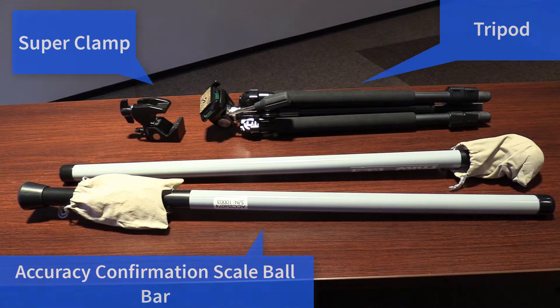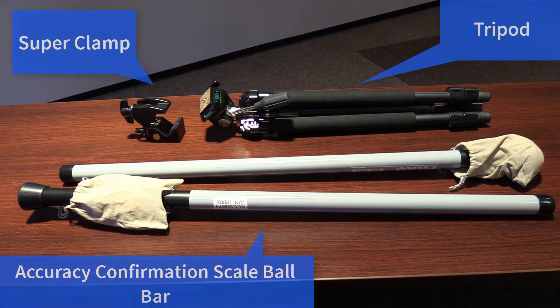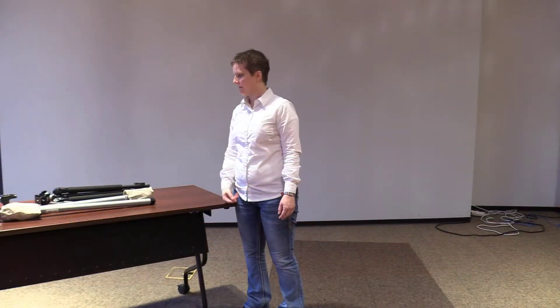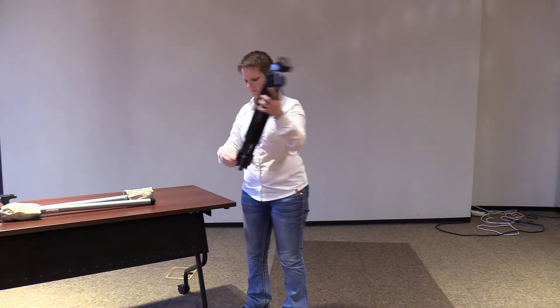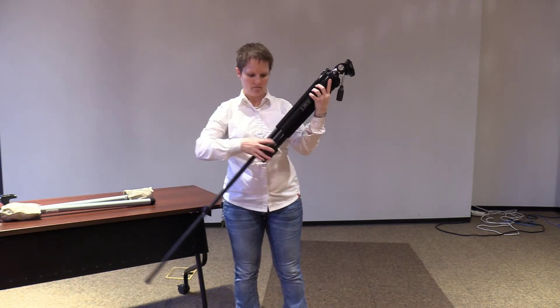On the table is the tripod, super clamp, and the Accuracy Confirmation Scale Ball Bar. Setting up the Accuracy Confirmation Scale Ball Bar and tripod is a breeze. Extend the tripod to the desired height.